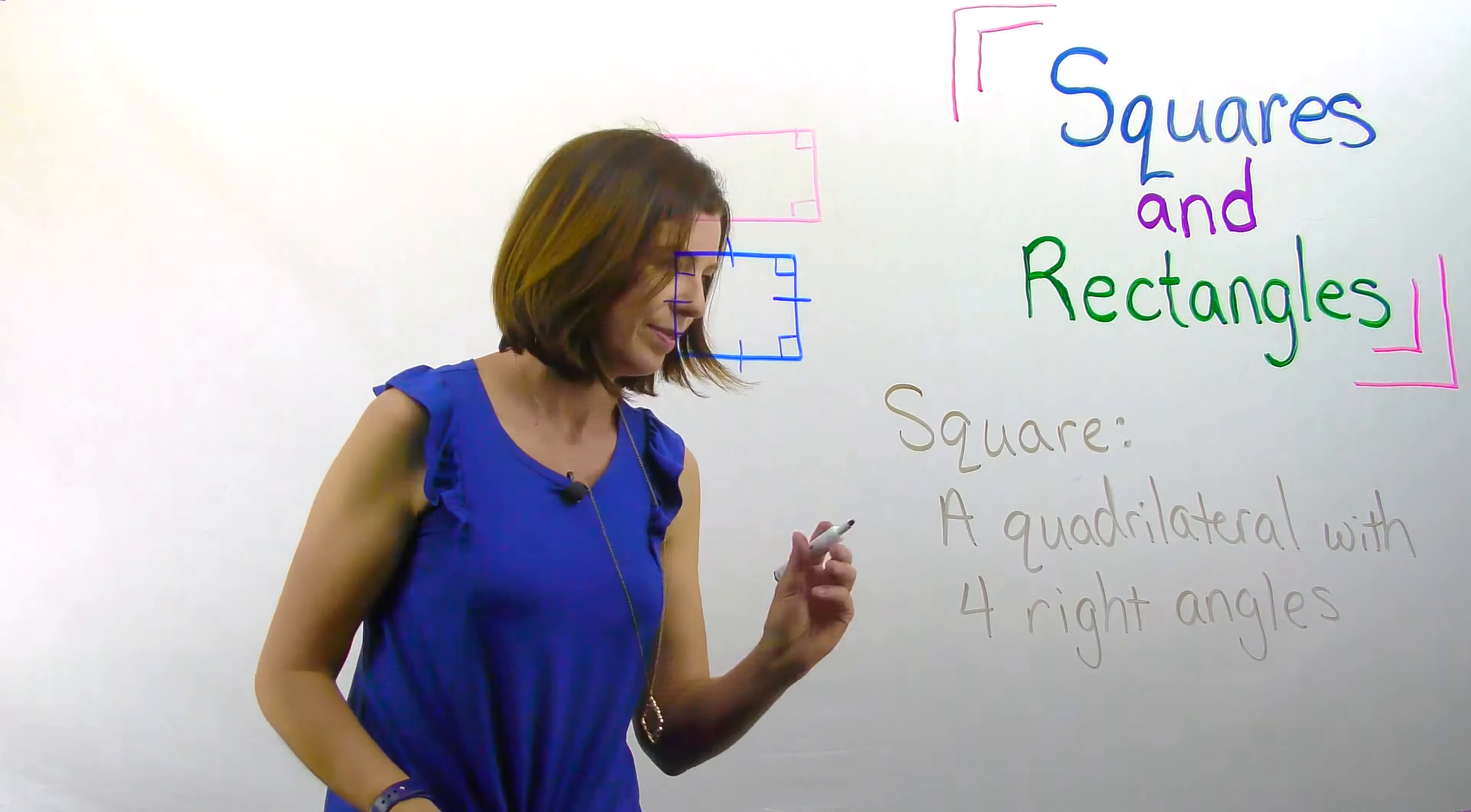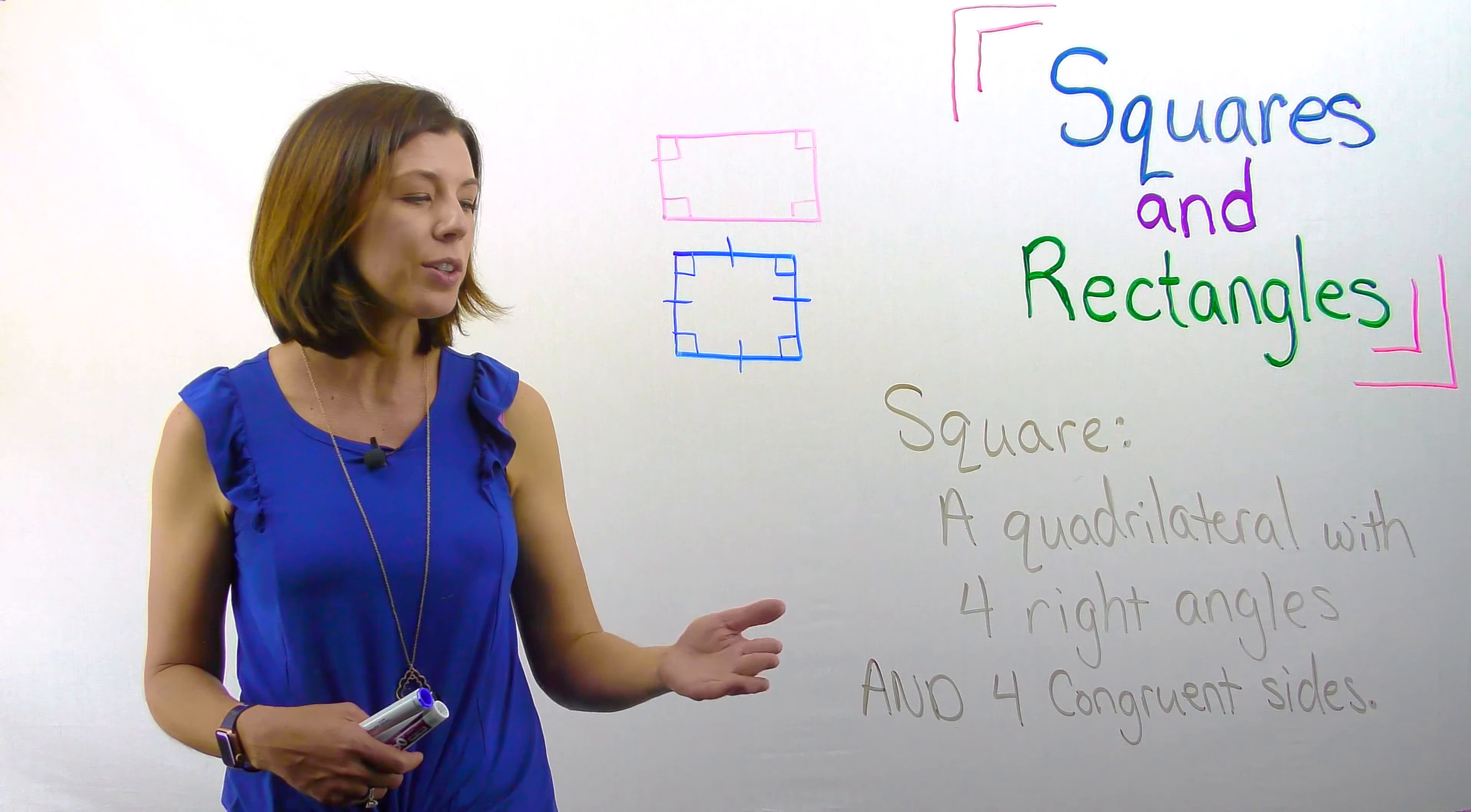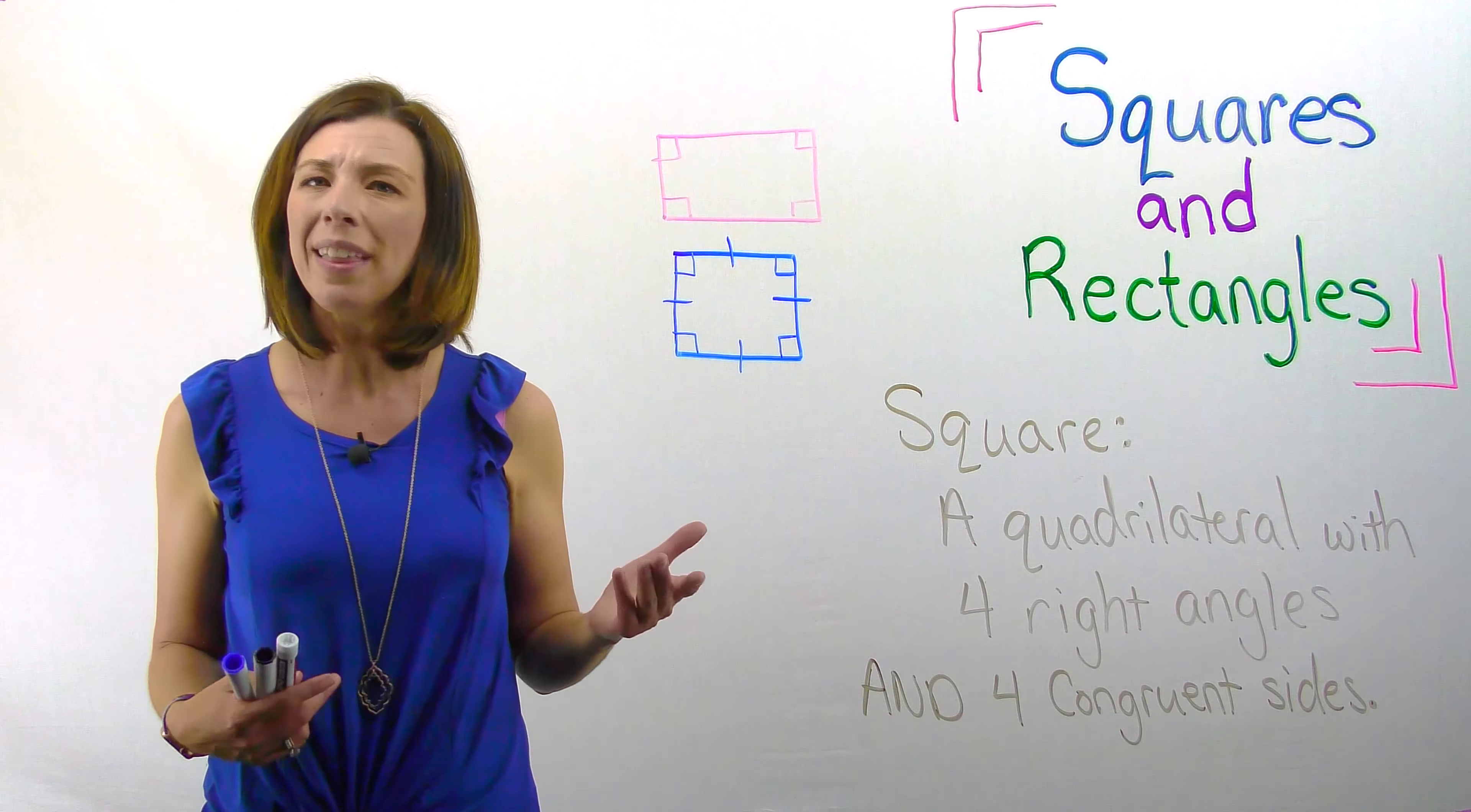Based on the definition of rectangle—a quadrilateral with four right angles—is this a rectangle? It's a quadrilateral with four right angles. However, what makes a square unique is that all of these sides are congruent. So we sometimes say that a square is a special type of rectangle.